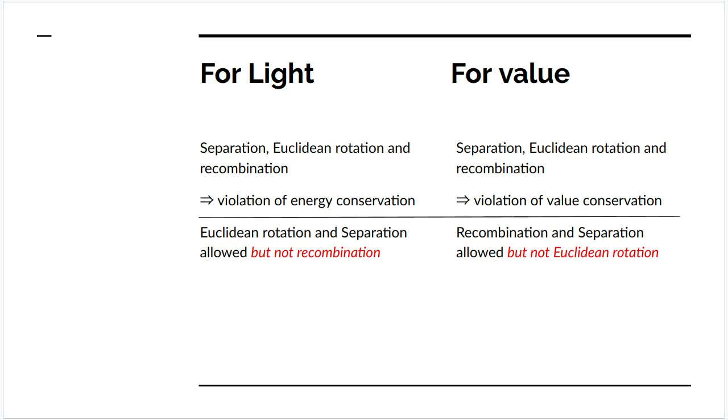For value, if you had separation, Euclidean rotation and recombination, you'd have a violation of value conservation. Not only would you have a violation of value conservation, you would apparently be able to produce infinite amounts of linen just by trading. How is it resolved in the case of value? By again allowing two of the operations and not the third. Recombination and separation, but not Euclidean rotation.